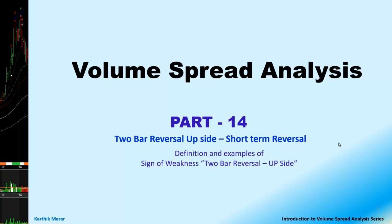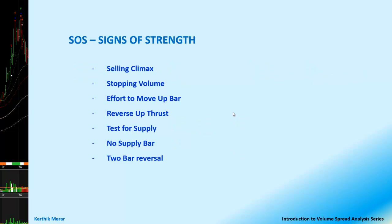Welcome to part 14 of the series on Volume Spread Analysis. Today we cover the 2-bar Reversal Upside and Short Term Reversal. We have been looking at the various signs of strength — let's quickly recollect: the Selling Climax, the Stopping Volume, Effort to Move Up Bar, Reverse Up Thrust, Test for Supply, No Supply Bar, and the 2-bar Reversal Upside.